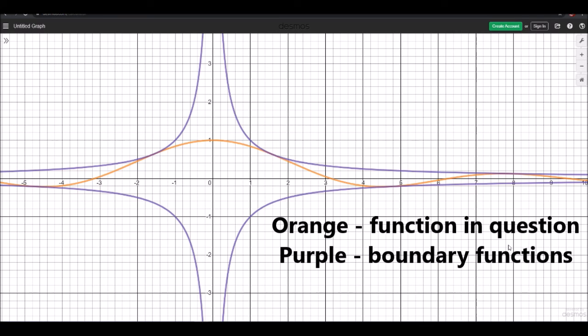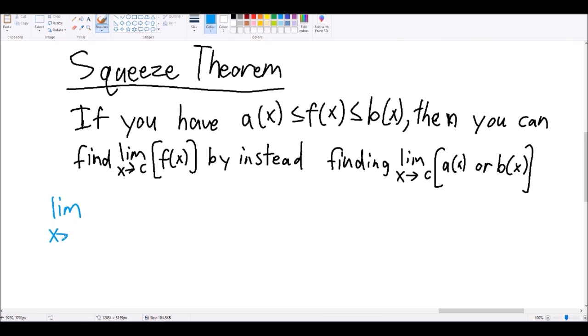It's called the squeeze theorem because these other functions tend to look like boundaries for the function in question. Trig functions tend to be the most common examples because they are one of the messiest functions in existence. So let's see it in practice with the limit as x approaches infinity of f of x equals sine of x over x.